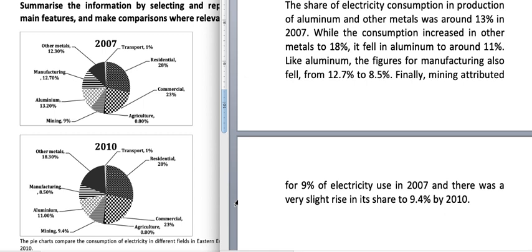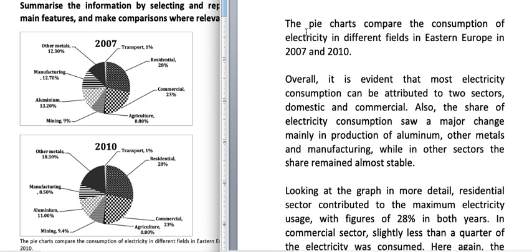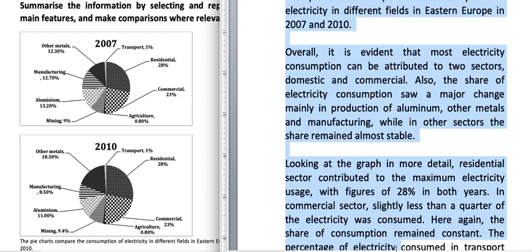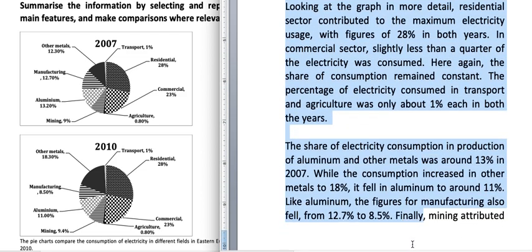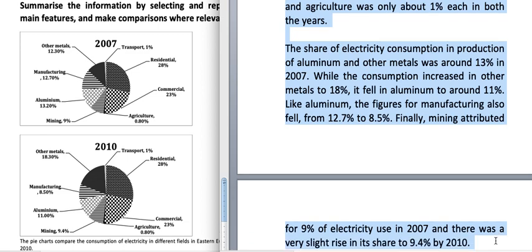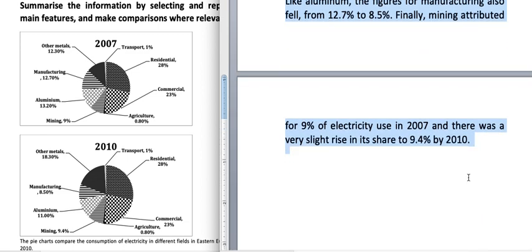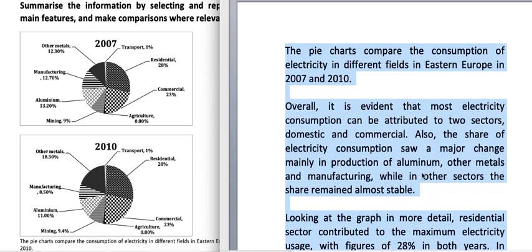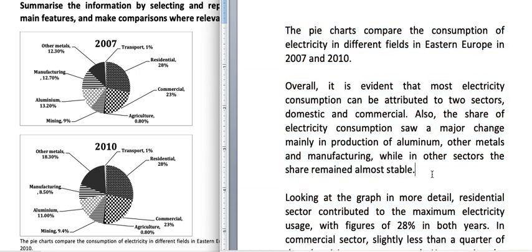So this is my explanation of the graph. You can see that when you put the overview after the introduction it becomes relatively easy, because you've given the general trends and it hasn't gone too lengthy. You have to write a minimum of 150 words but it shouldn't go beyond 190–200 words. This answer is 193 words, which is pretty good. I hope you like the explanation. Thank you very much for watching.